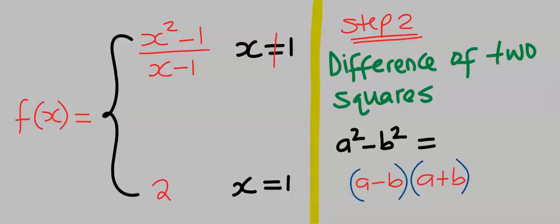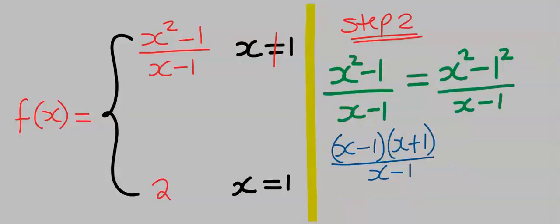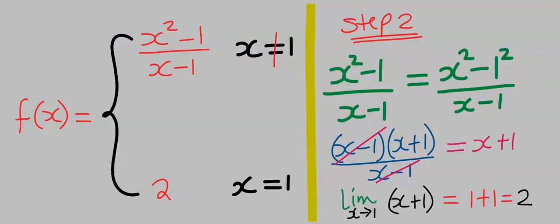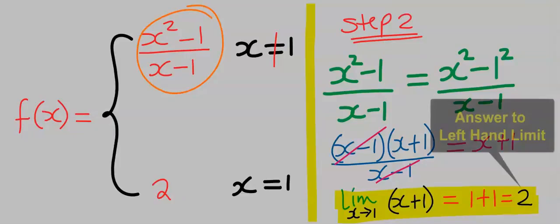Here we are going to apply the difference of two squares, which states that a squared minus b squared equals (a minus b)(a plus b). Applying the difference of two squares, this will cancel with this. Remember that 1 squared is the same as 1, which we have applied here. We are left with x plus 1. Taking the limit of the function as x tends to 1, we get 2. We solved the upper arm, which is the left-hand limit, and we got 2.